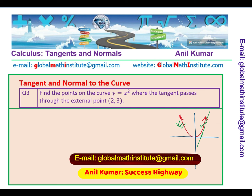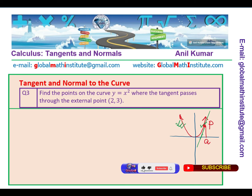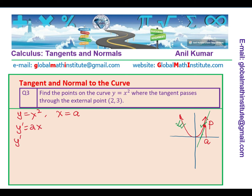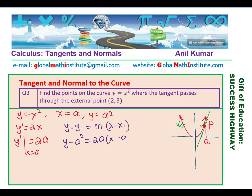Let us consider the point on the curve where the tangent touches as P, with x value equal to a. In the equation y equals x squared, the derivative is 2x, so the derivative at x equals a is 2a. Since the tangent passes through point P where the y value is a squared, we use the point-slope form: y minus a squared equals 2a times (x minus a). That is the equation of the tangent at point P.